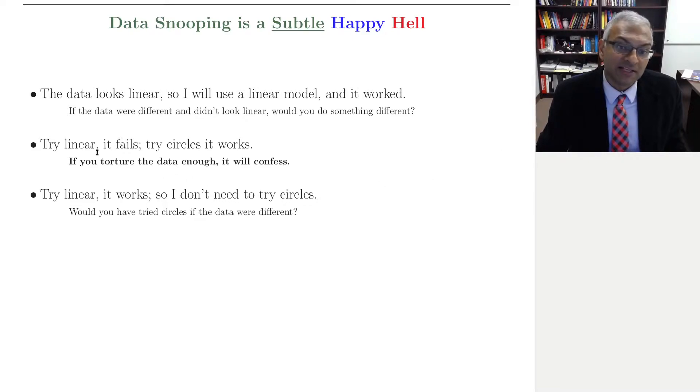You've lost the first step of learning. You are data snooping in deciding what hypothesis set to pick. And there's no way that we can then use the data to assess the outcome. In a more subtle way: Try linear. It works. So I don't need to try circles. That's more subtle.